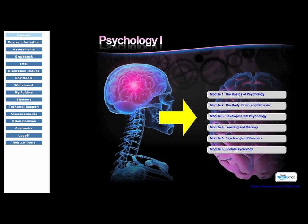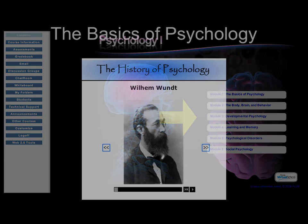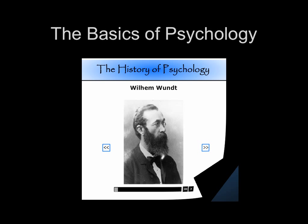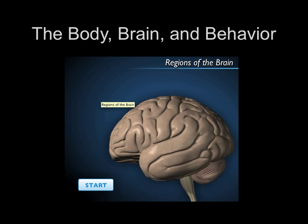Psychology One is divided into six modules, each covering a specific topic. Module One is an introduction into the basic methods of psychology and a brief history of its founding theorists. Module Two delves into the inner workings of our brain and how our nervous system controls our body, behaviors, and thoughts.